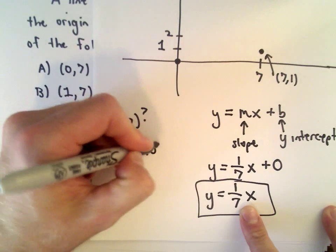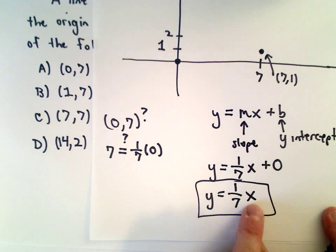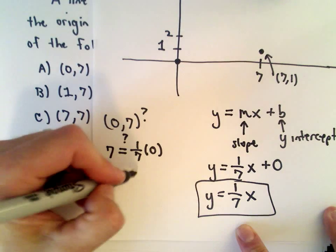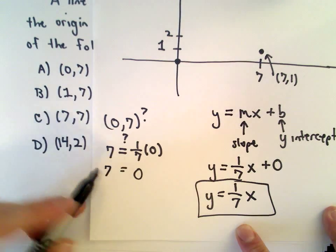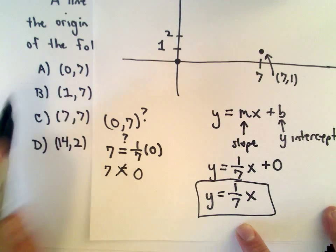I'm just substituting in y = 7 and 0 for x. Well, (1/7) multiplied by 0 is 0. 0 does not equal 7, so I would know that answer choice A is not correct.